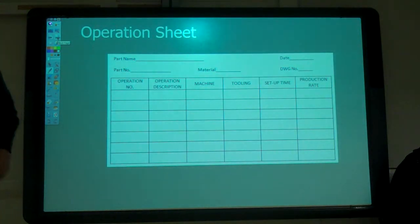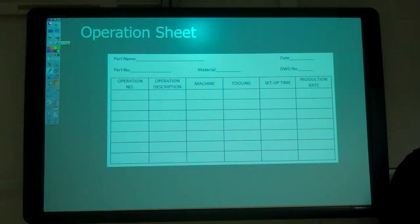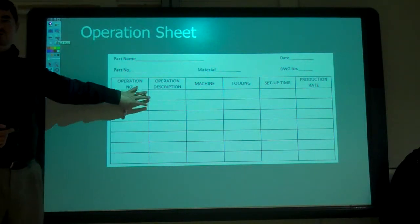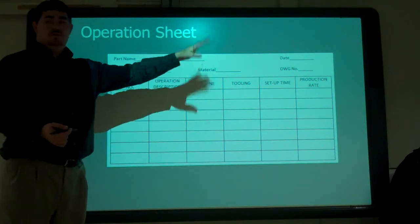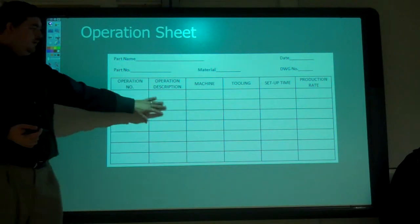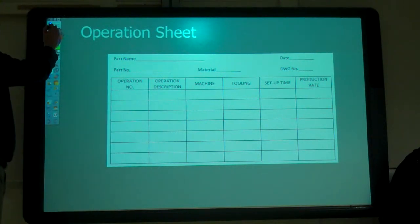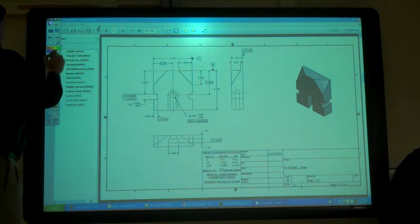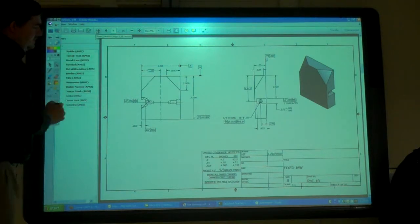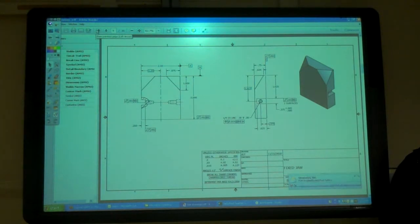For each part, we want to do an operation sheet. We want to figure out what we need to do to make each part. Put in the part name, the number of material, drawing number. Then figure out what operations do we need, like on this one.